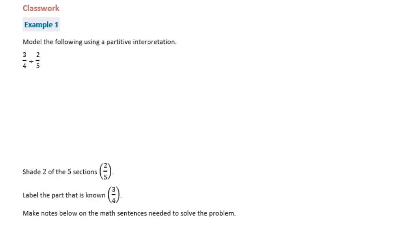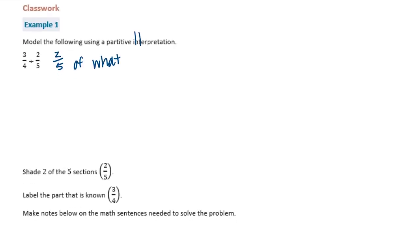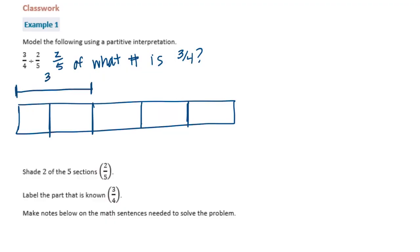The partitive interpretation means we're going to interpret this division problem as saying: two-fifths of what number is three-fourths? So let's draw a model and split it into fifths, where two-fifths of it is equal to three-fourths.